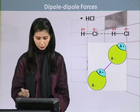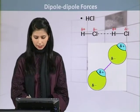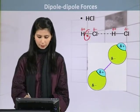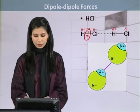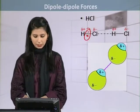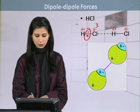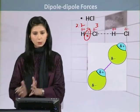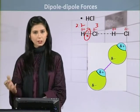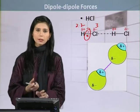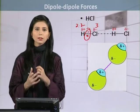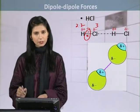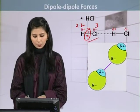Hydrogen becomes electropositive and Cl becomes electronegative. There is a shared pair of electrons (cross and dot sign). Since chlorine is more electronegative (hydrogen's electronegativity is 2.2), chlorine pulls the shared pair of electrons more toward itself, acquiring a partial negative charge. The electron density on hydrogen decreases, so it acquires a partial positive charge.